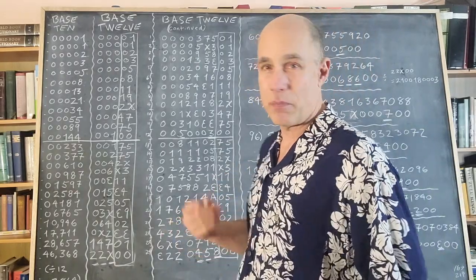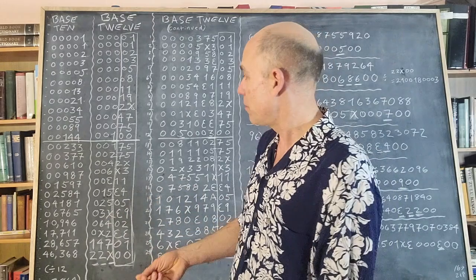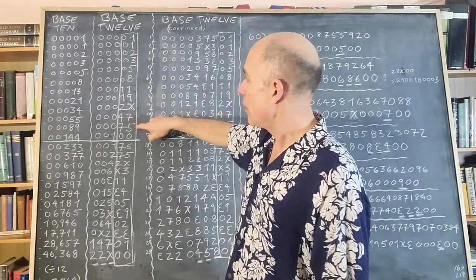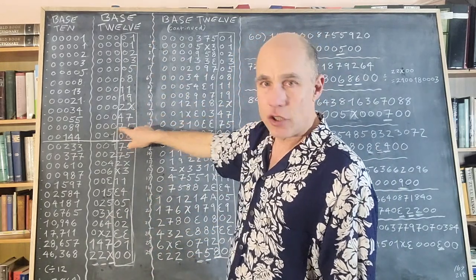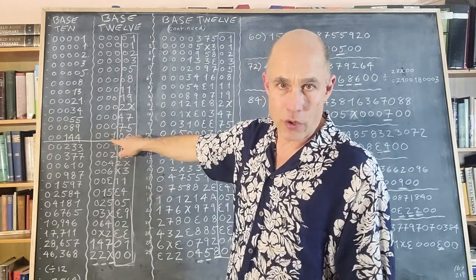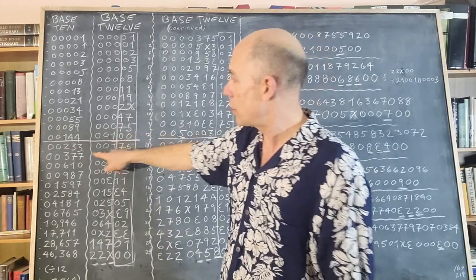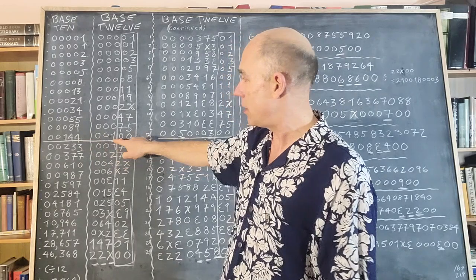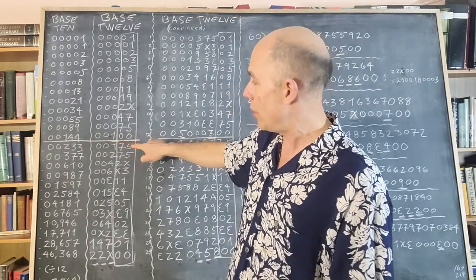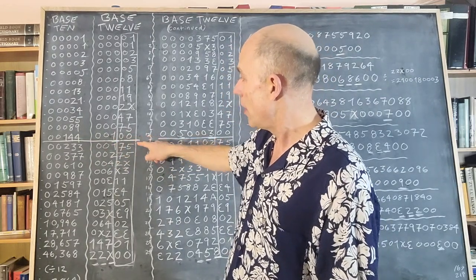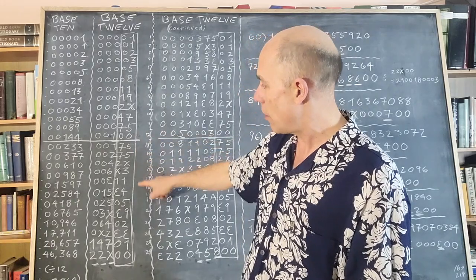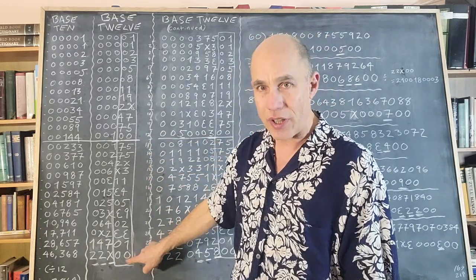We see the pattern 7 DOE 5, and then a GROSS. A GROSS is 144, but in base 12 it looks like 100 — so the two zeros show up. The pattern keeps going, keeps evolving, and we get another two zeros.